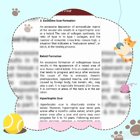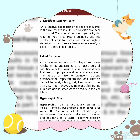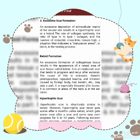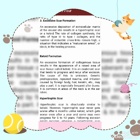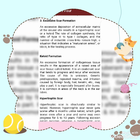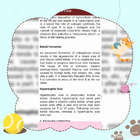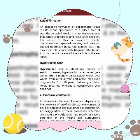Excessive scar formation: excessive deposition of extracellular matrix at a given site results in hypertrophic scar or keloid. The rate of collagen synthesis, the ratio of type 3 to type 1 collagen, and the number of reducible cross-links remain high — a situation that indicates a maturation arrest in the healing process.